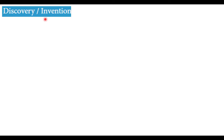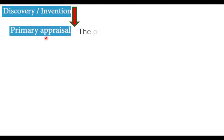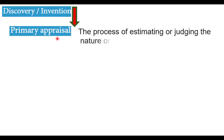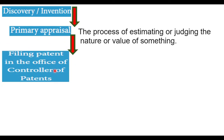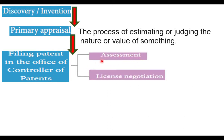Discovery or invention is the first stage of patenting. An inventor or biotechnologist develops a new technique, new product, or designs a new genetically modified organism — that is the invention. After invention comes the primary appraisal, which is a process of estimating or judging the nature or value of the invention. Third, the process occurs in the patent office: filing the patent in the office of the Controller of Patents. The patent application is filled and submitted, and the assessment is done by officials.